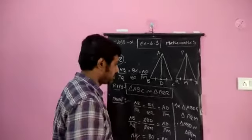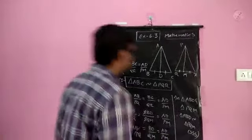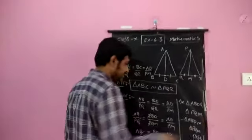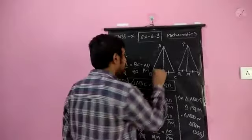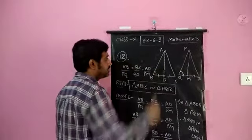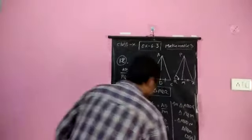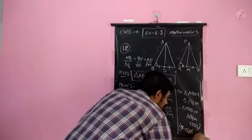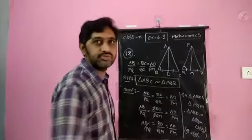Since triangle ABD is similar to triangle PQM, their corresponding angles are equal. Therefore, angle B equals angle Q. The reason is: corresponding angles of similar triangles are equal.